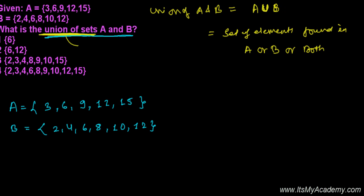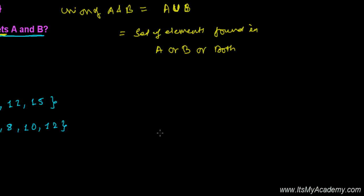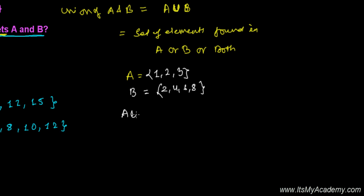Let me first make you understand with an example, then we'll return to the question. Let's say set A contains {1, 2, 3} and set B contains {2, 4, 6, 8}. A ∪ B means elements found in A, found in B, or found in both. So we include all elements: 1, 2 (not repeated since it appears in both), 3, 4, 6, and 8. We do not repeat numbers in a set.